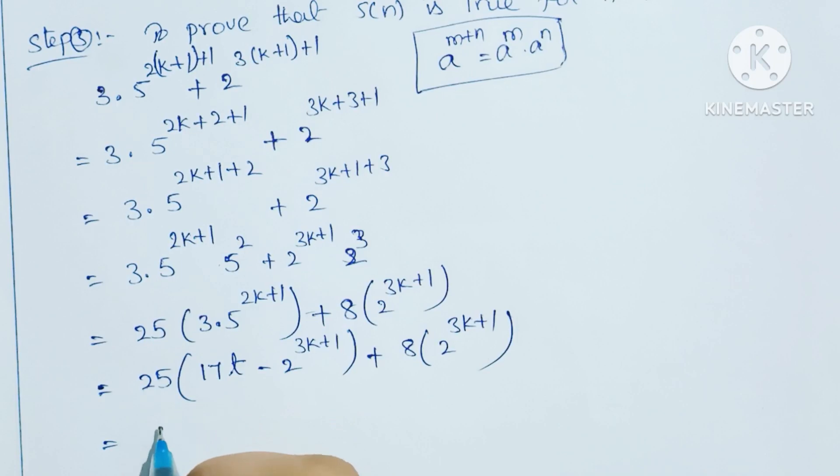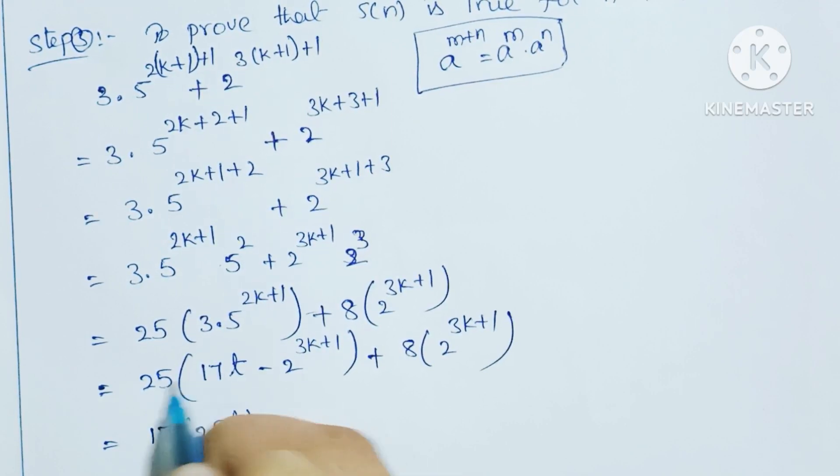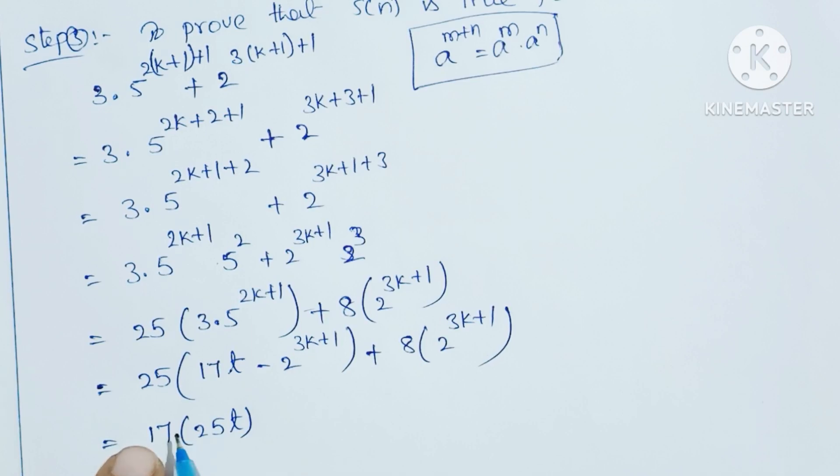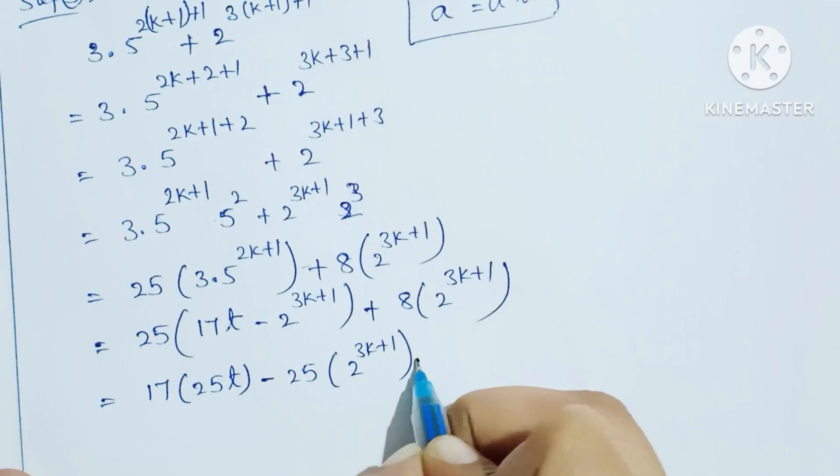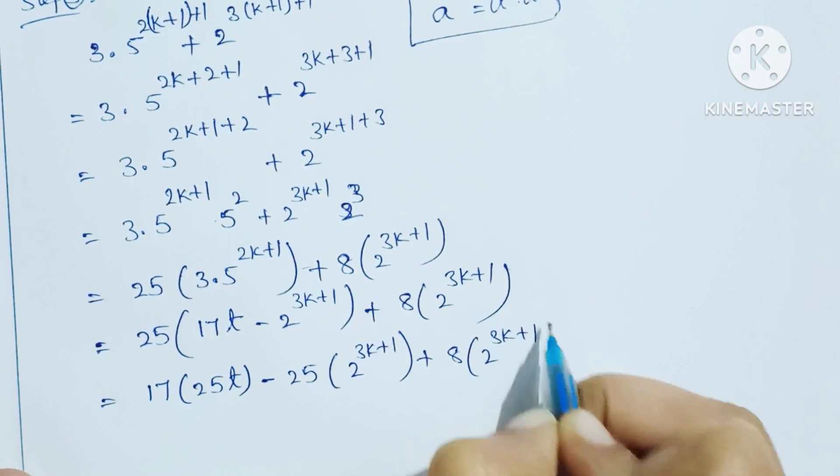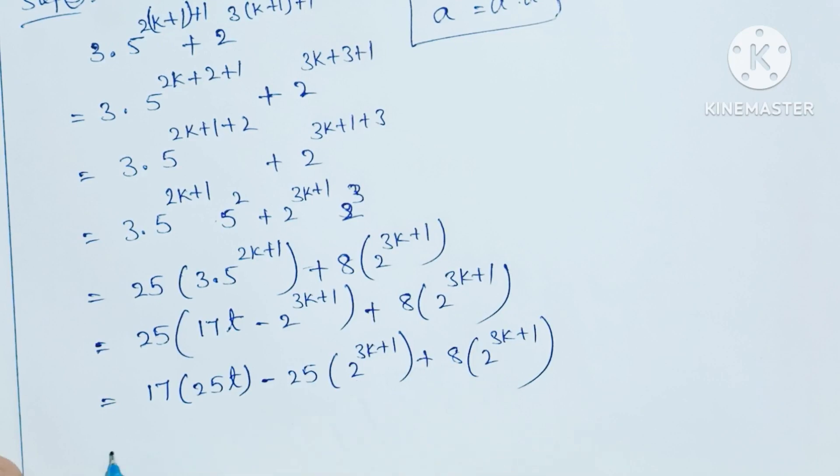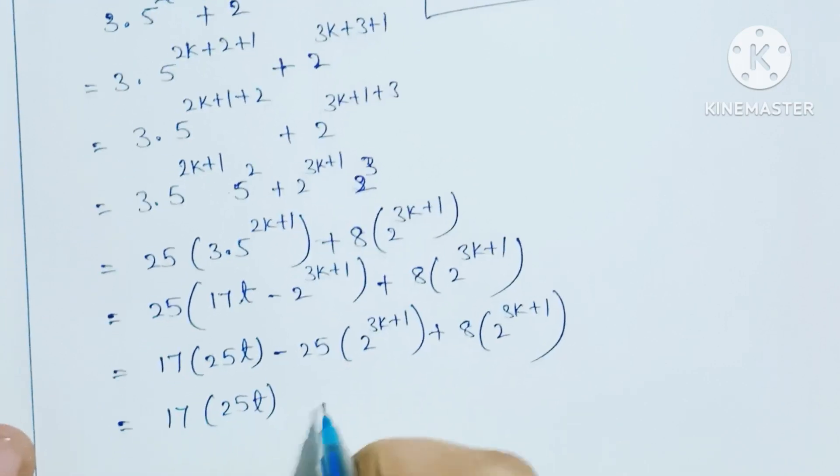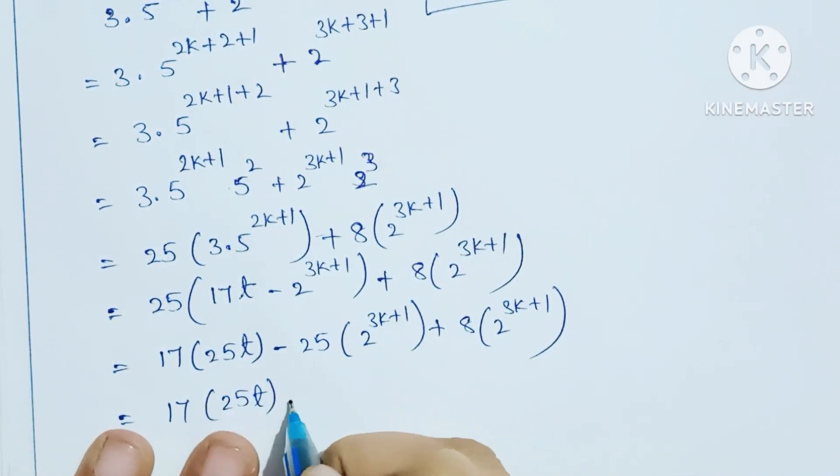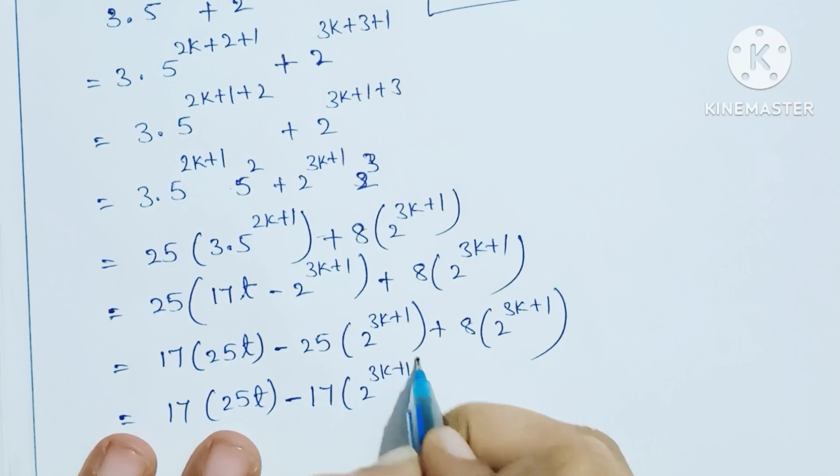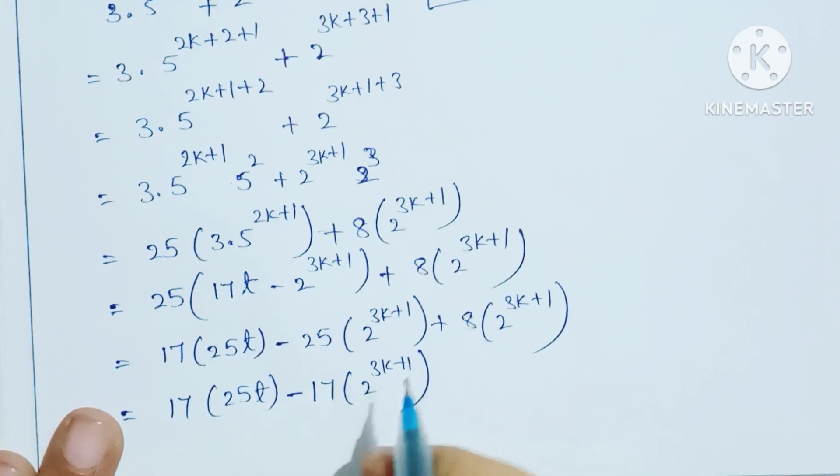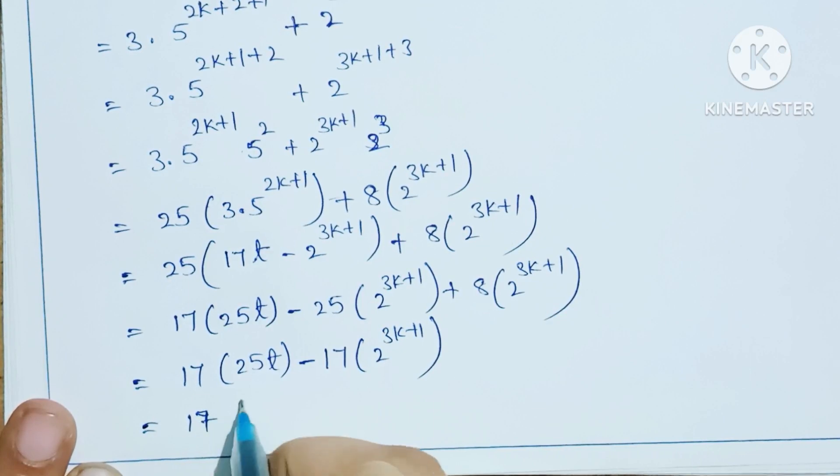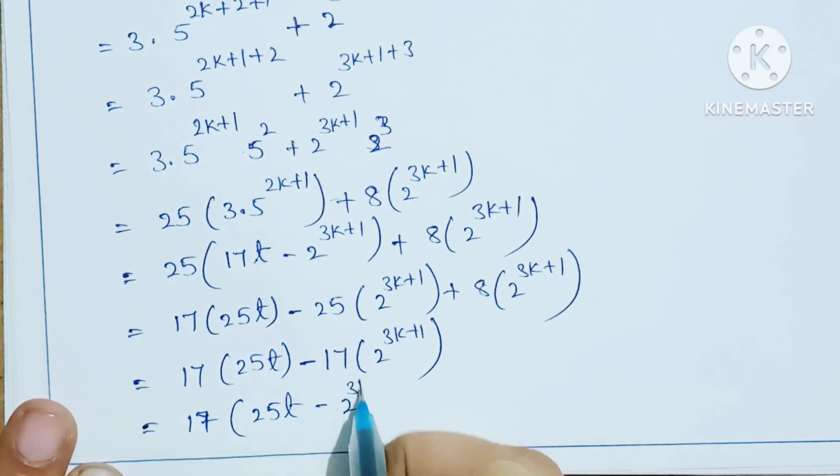Multiply: 17 into 25t minus 25 into 2 power 3k plus 1 plus 8 into 2 power 3k plus 1. So 17 into 25t. Next, in these two values, 2 power 3k plus 1 is common. Minus 25 plus 8 equals minus 17. We can factor: 17 into 25t minus 17 into 2 power 3k plus 1. In these two terms, 17 is common.